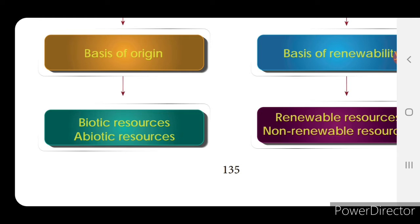Bio means living things — plants, animals, everything. Abiotic means non-living things. Biotic resources come from living organisms; abiotic resources are those that do not have any living authority.